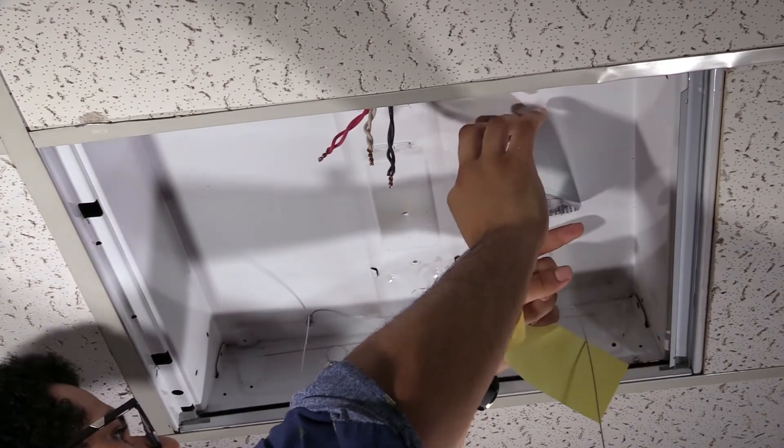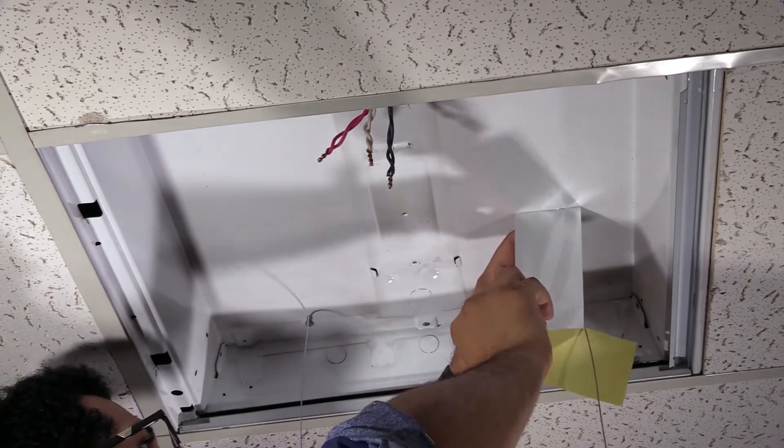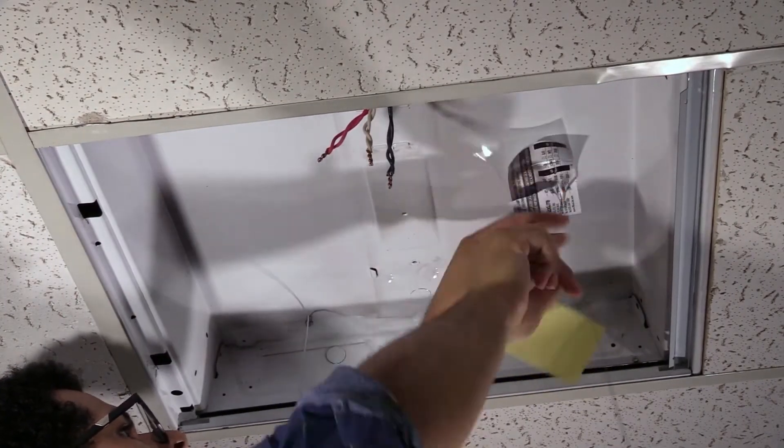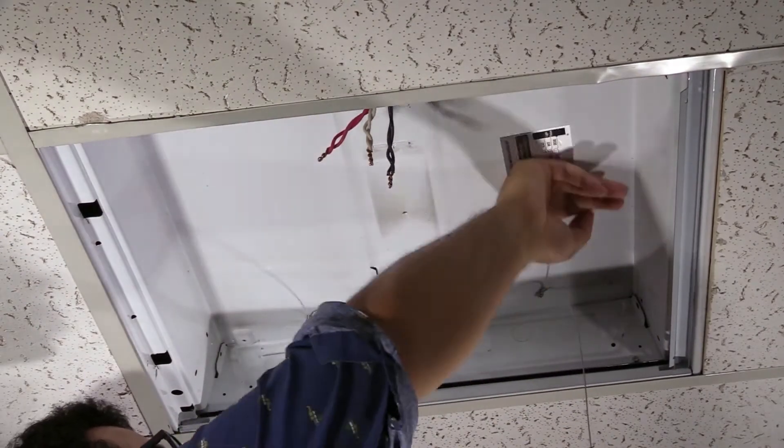Now we'll apply the relamping label to the housing somewhere where it can be visible. This will let anyone who works on the fixture in the future know that it's been modified for LED.